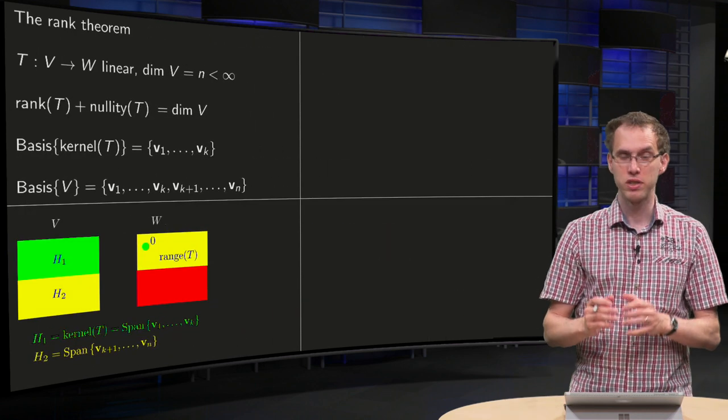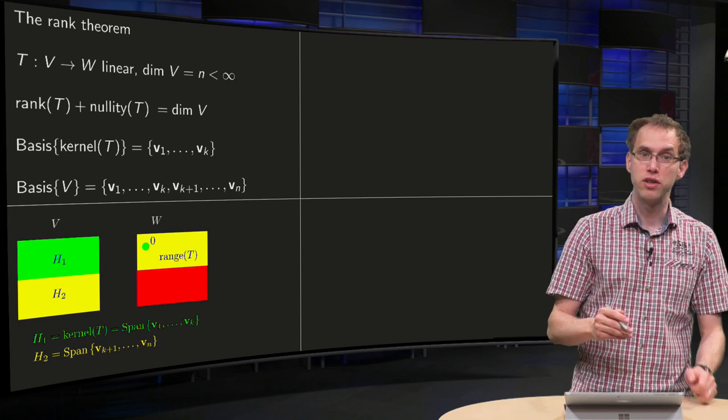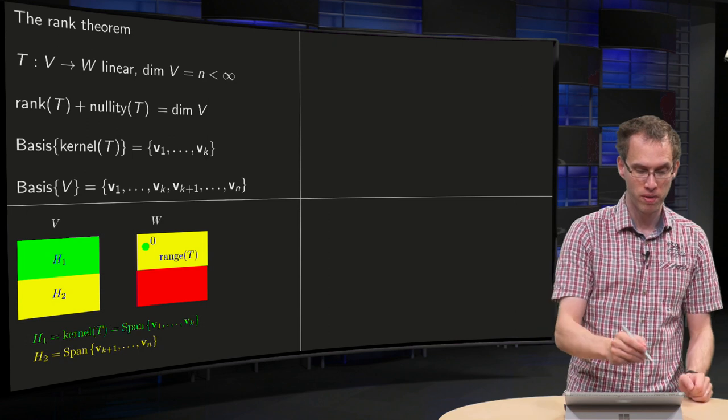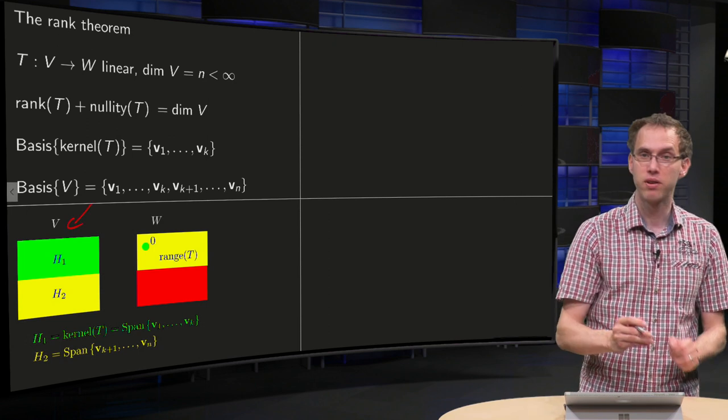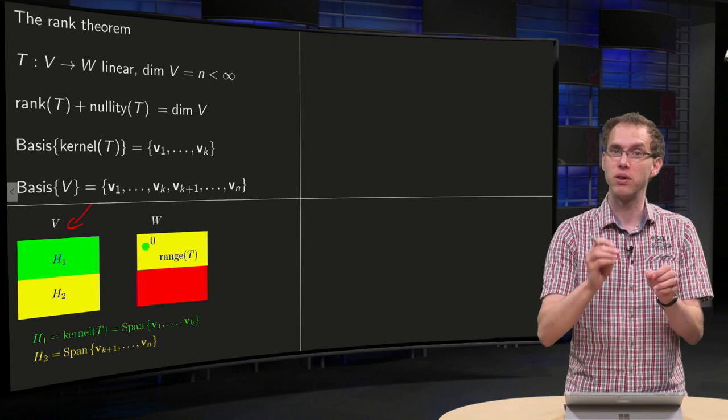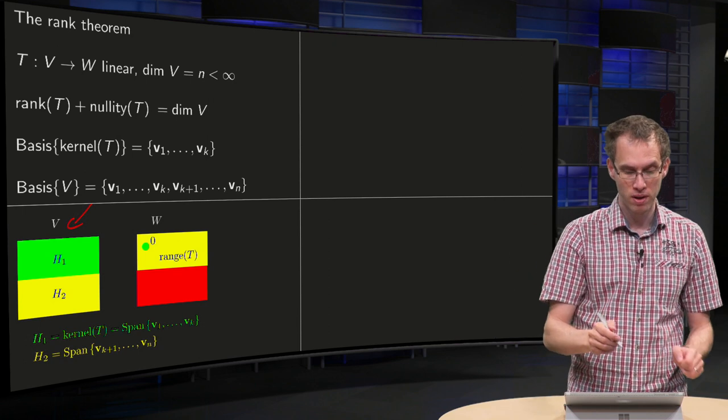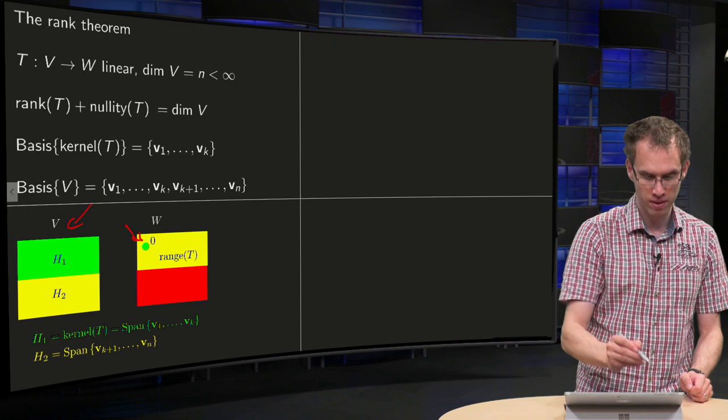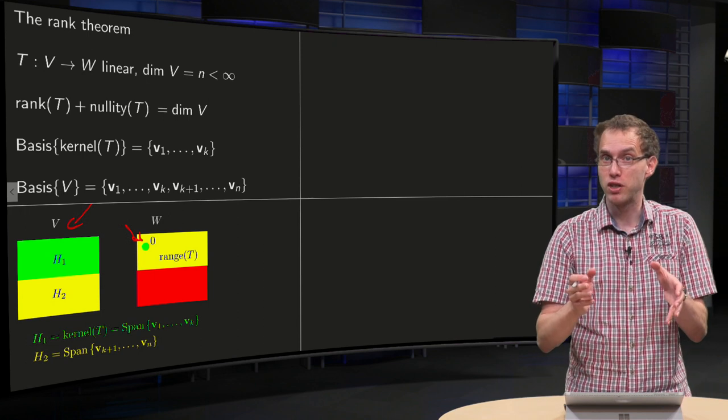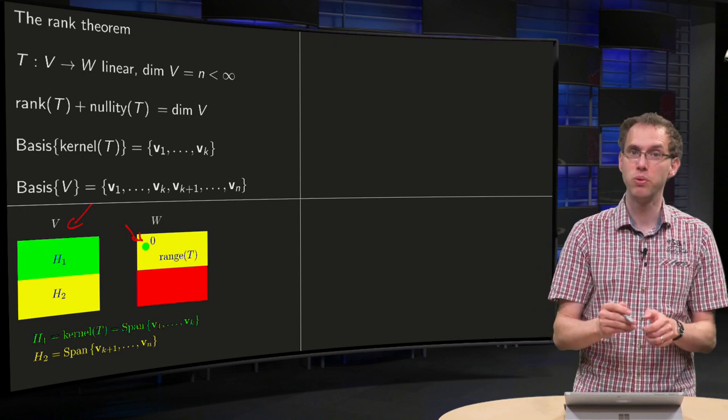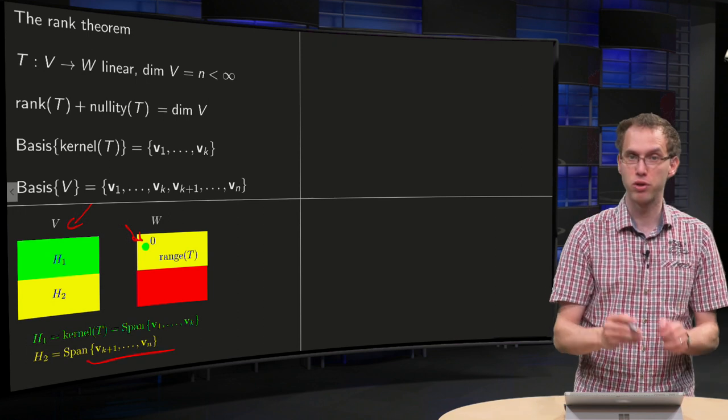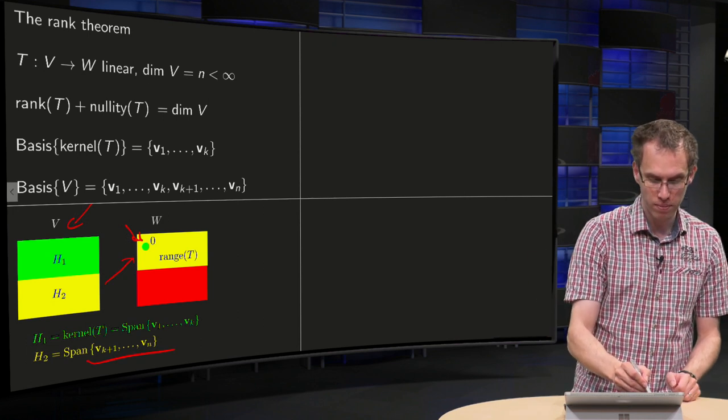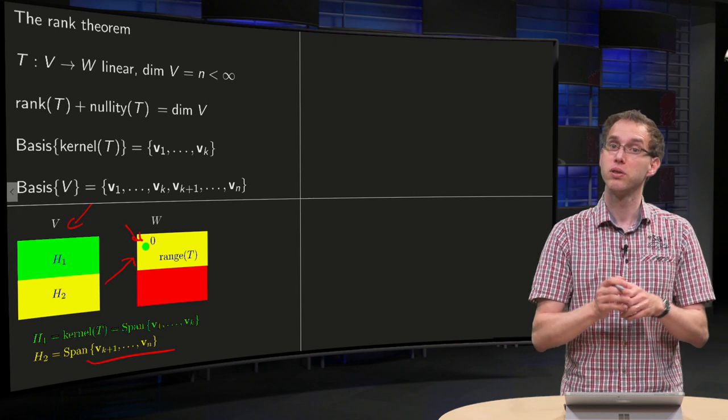Now, what's the idea? Let's illustrate it in this figure. This V basically splits up kind of in two parts, H1 and H2. H1 over here consists of all vectors in the null space, so they are all mapped to the zero vector in W over there. And then we have some parts that is left, H2.